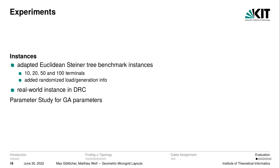In our experiments we evaluated the algorithm as guided by the heuristic. We chose a set of adapted Euclidean Steiner tree benchmark instances with 10, 20, 50 and 100 terminals, taken from the DIMACS-11 challenge and extended with randomized load and generation information. We also used a real-world example of a microgrid in the Democratic Republic of the Congo. To find a good set of parameters for the genetic algorithm we conducted a parameter study testing many different combinations of mutation rates and population sizes.